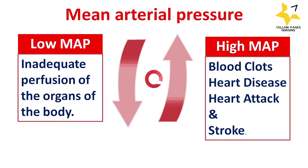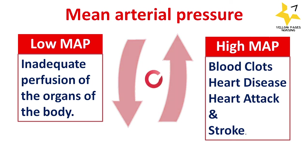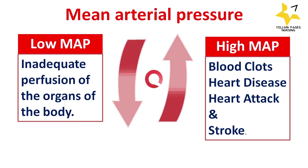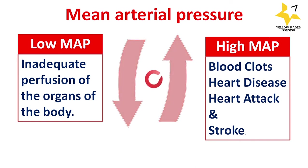High MAP may lead to blood clots, heart disease, heart attack, and stroke. In the case of low mean arterial pressure, the goal is to increase the blood pressure, which may be done by administering intravenous fluid, blood transfusion, vasopressors, etc.